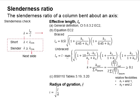This slide shows the checking of the slenderness ratio of a column bending about one axis. A column is considered a short column when its slenderness ratio is less than the slenderness limit. When it is more than or equals to the limit, it is considered as slender.